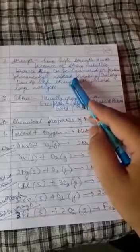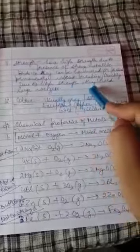Next is strength. They have high strength due to the presence of strong metallic bonds. That is, they can be hammered or pressed permanently without breaking or cracking. It means metals do not break easily, but they can be drawn into thin wires or thin sheets. And due to high strength, they hold large weight among themselves.